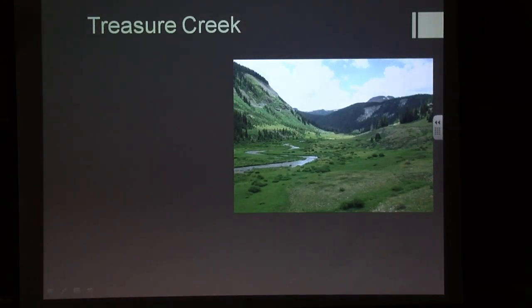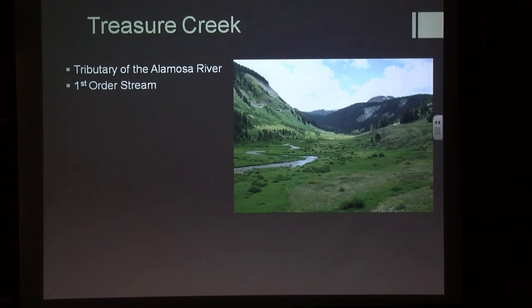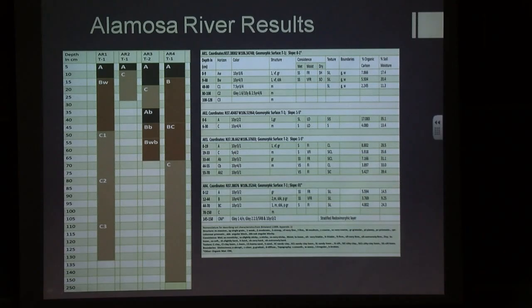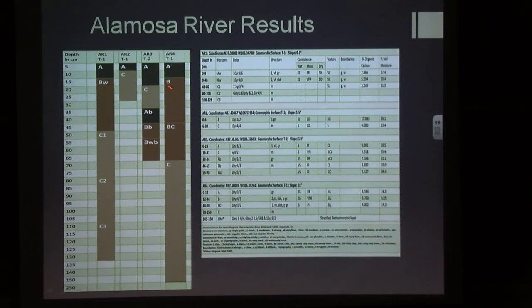Treasure Creek: definitely the nicest looking spot we work at. It's a tributary of the Alamosa River and a first-order stream — the smallest stream we look at within this study. We looked at it mainly to try to find some possible correlations to glaciers; we weren't very successful with that, but it happens. We described one soil at this locality. The important thing to look at in these columns is the depth of the soil, with the bottom being water table. The soil we found was an ABw — the Bw stands for Weakly Developed, meaning it hasn't had a long time to form, so it's a younger soil.